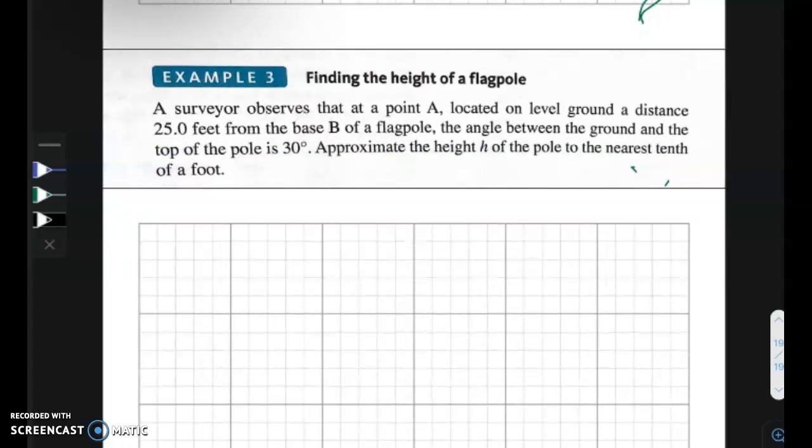In the next example, a surveyor observes that at a point A, located on level ground, a distance 25 feet from the base B of a flagpole, the angle between the ground and the top of the pole is 30 degrees. Approximate the height h of the pole to the nearest tenth of a foot.